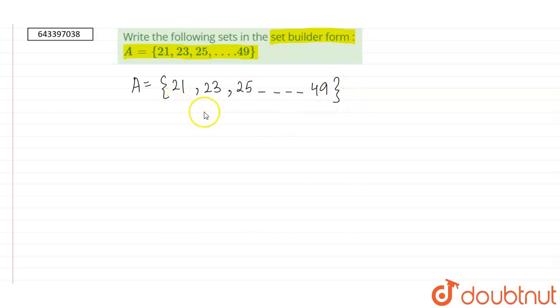We can observe that these numbers are odd numbers and they are between 20 to 50, and all of these numbers are whole numbers.